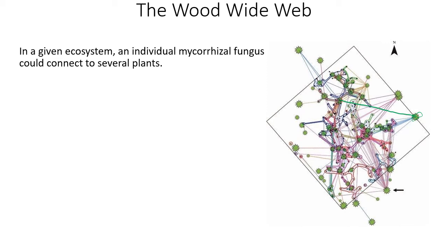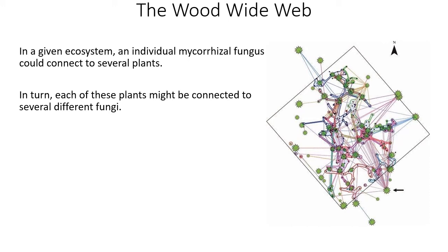Some trees have many connections, some only a few. Thinking ecologically about which trees to harvest, thin, or protect — a tree connected to almost all others in the environment, probably including many seedlings, is one you'd want to keep. Multiple fungi connected to multiple plants of different species creates an interconnected network. Almost all the trees in this stem map are connected to the same network; you could draw a continuous line showing how any two are connected.